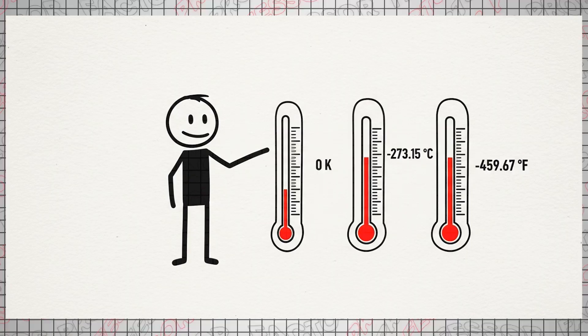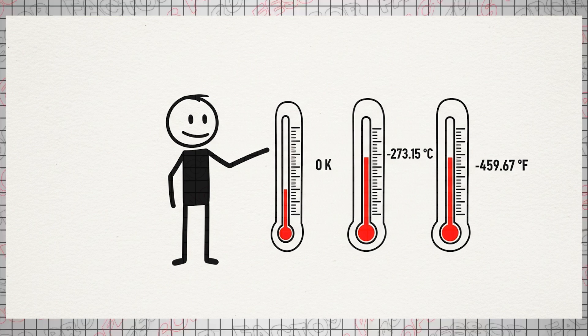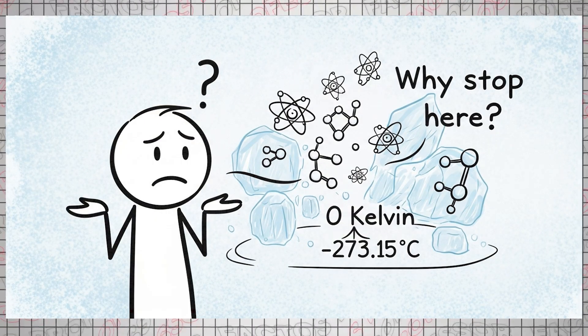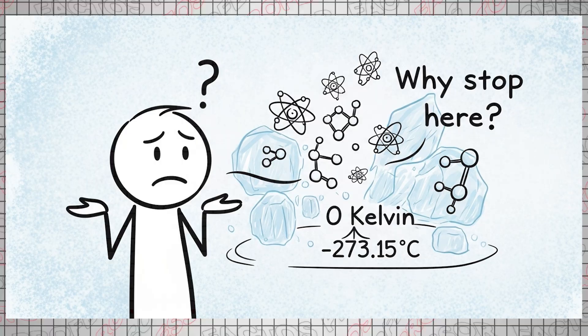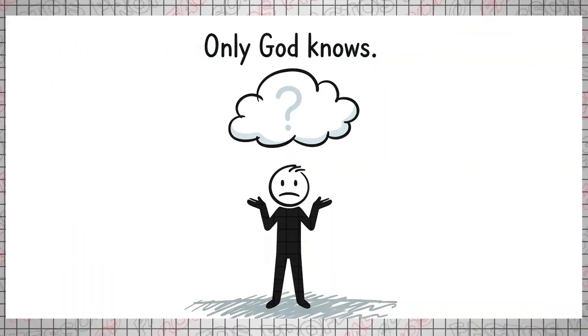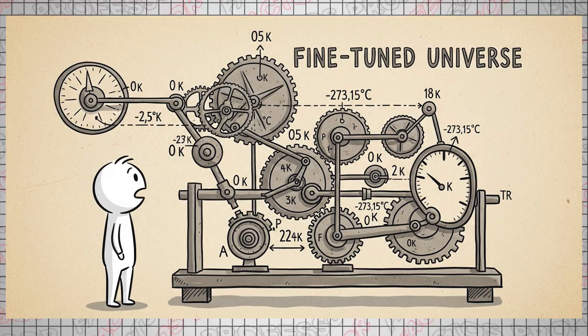But the more crucial question is, what is the true nature of absolute zero? Zero Kelvin is equivalent to minus two hundred seventy-three point one five degrees on the Celsius scale or minus four hundred fifty-nine point six seven degrees on the Fahrenheit scale. Why must atoms and molecules stop at precisely zero Kelvin, or exactly minus two hundred seventy-three point one five degrees Celsius, and not any other value?